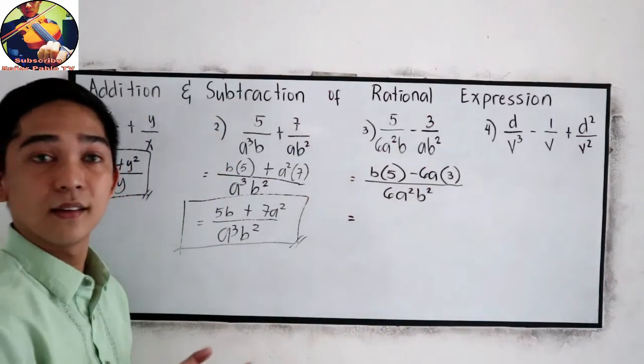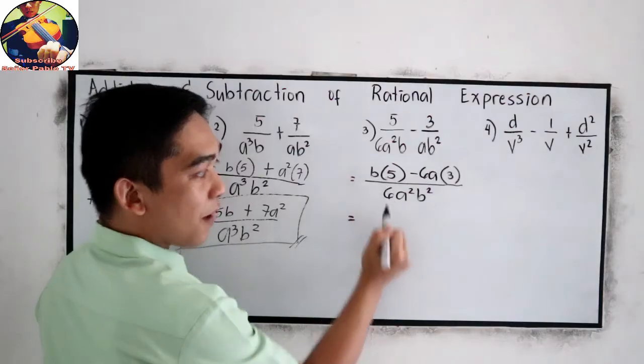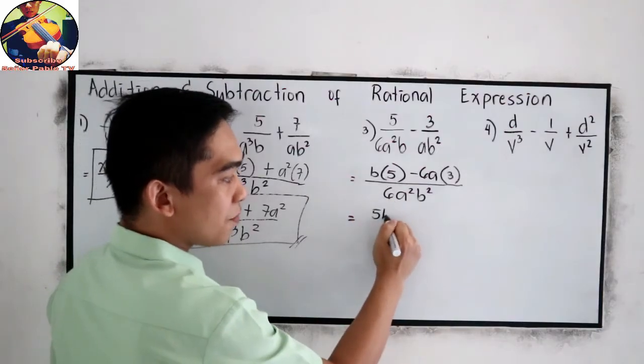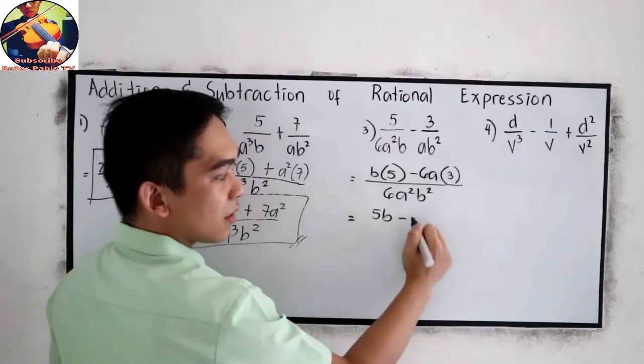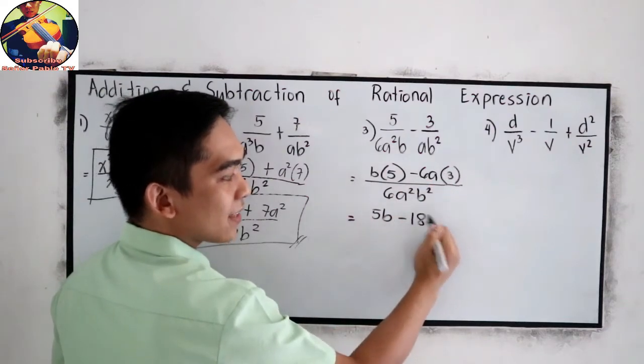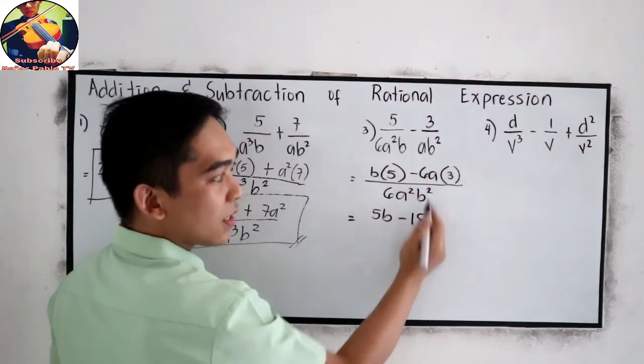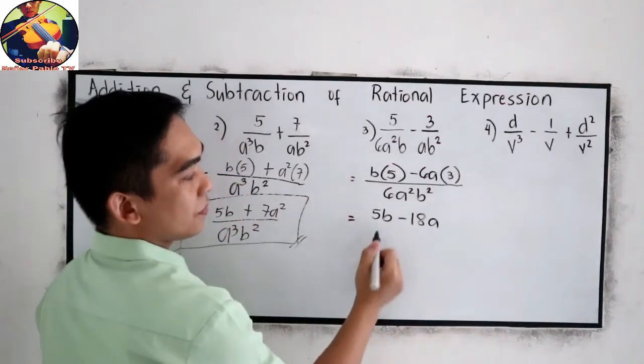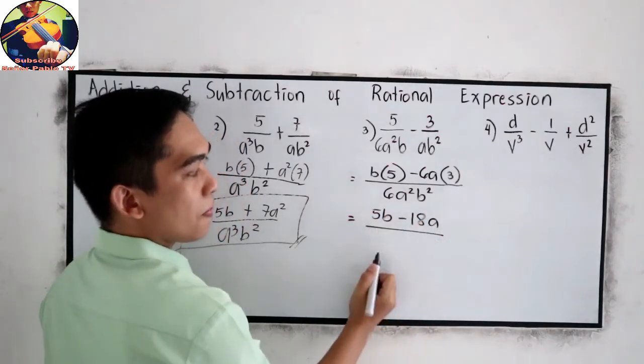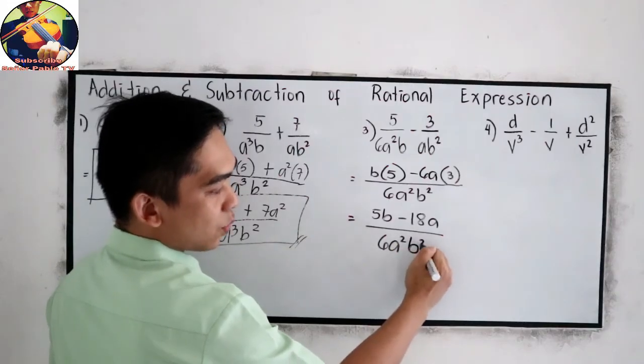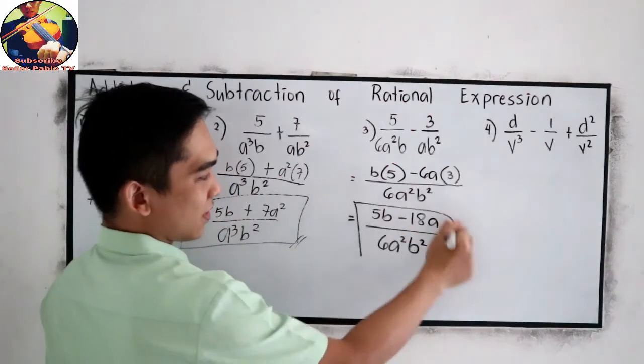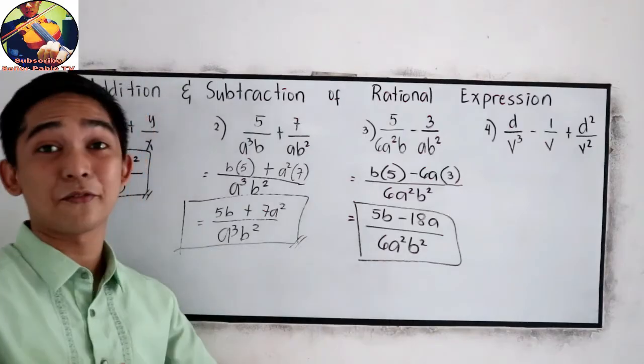Simplify, b times 5, so that is 5b. Negative 6 times 3, that is 18. Negative 18, then copy a. All over, 6a squared b squared. This is now our final answer.